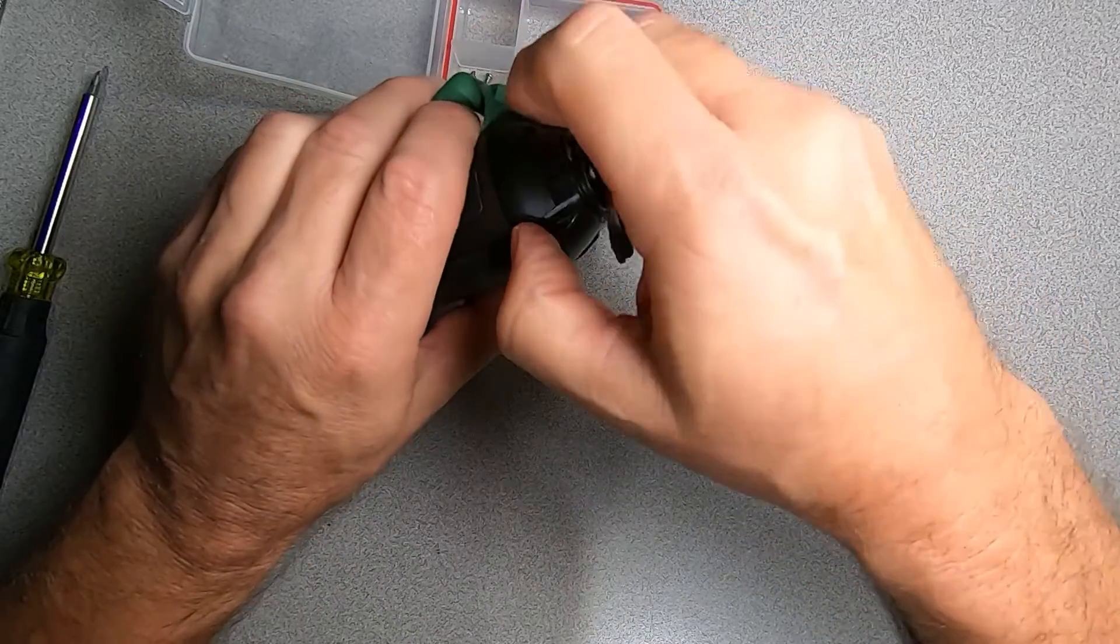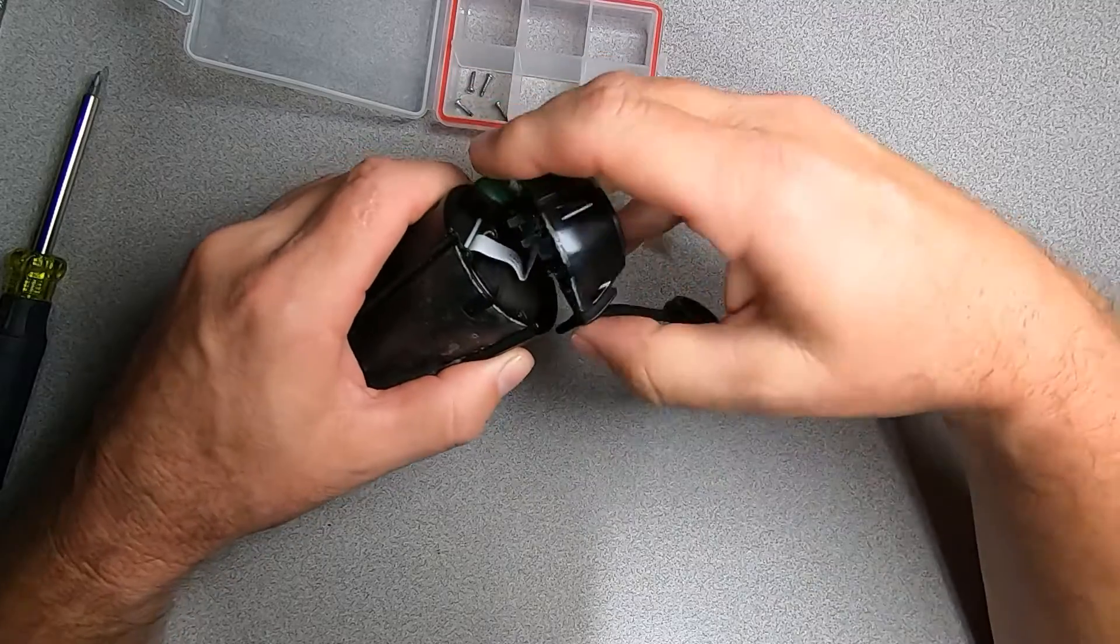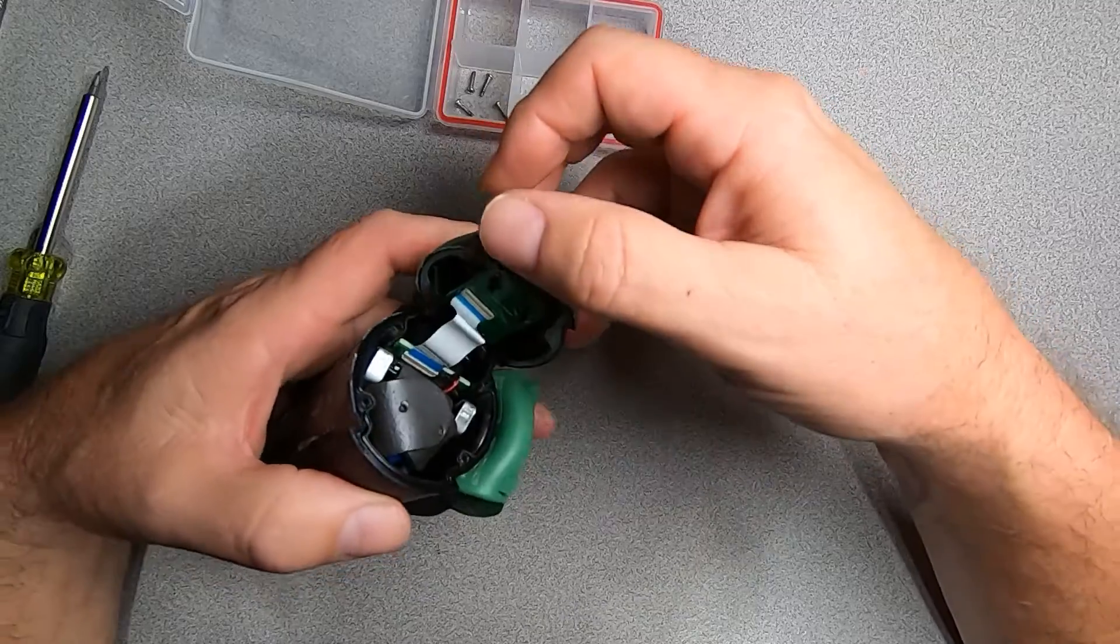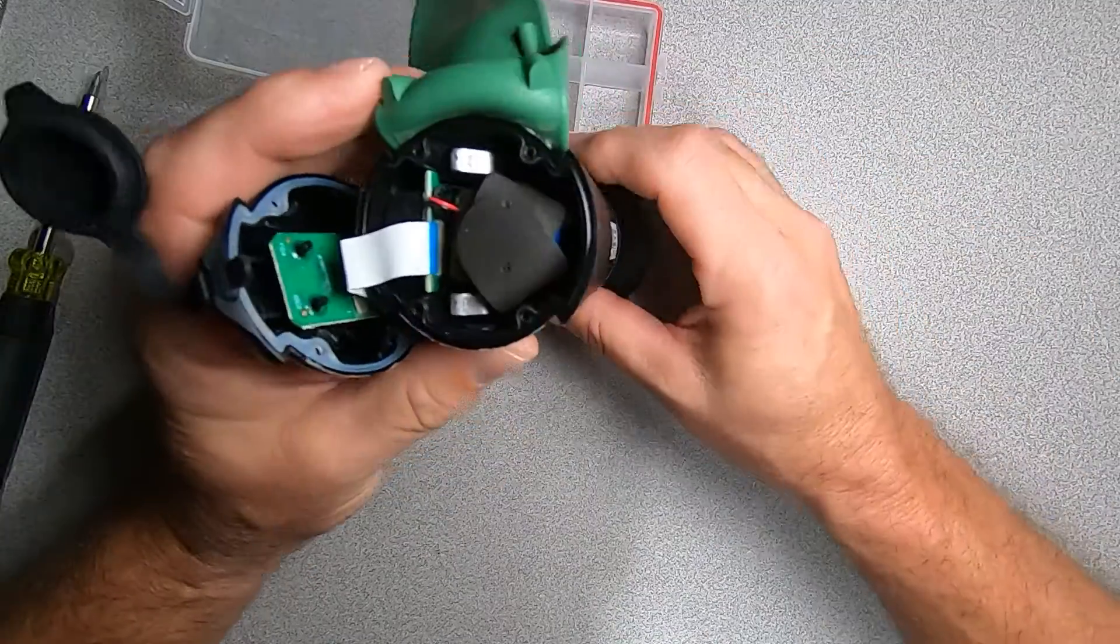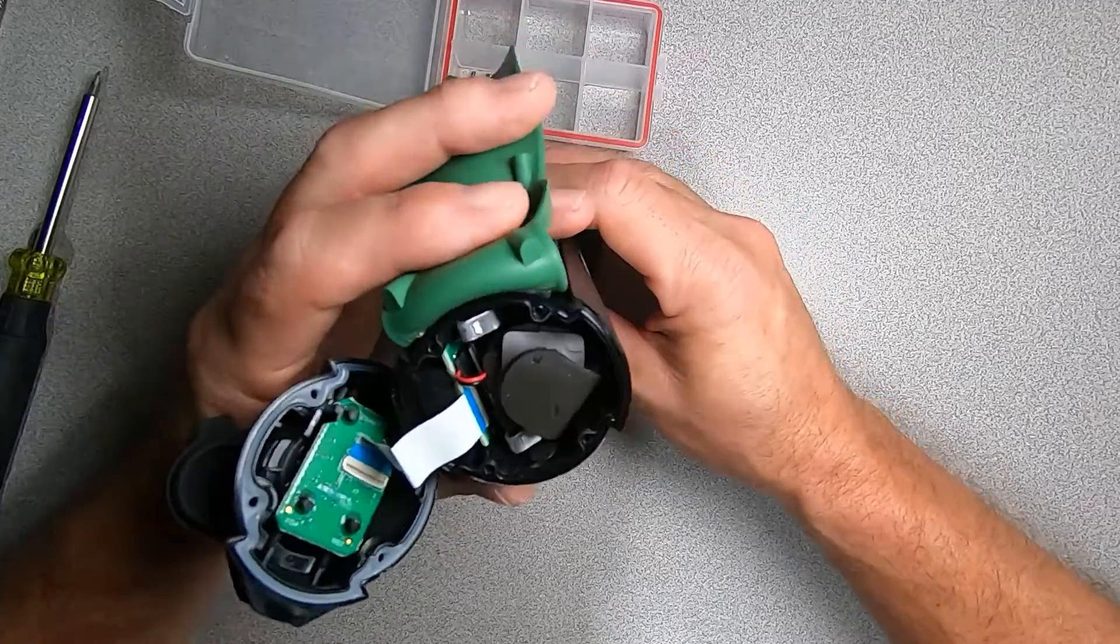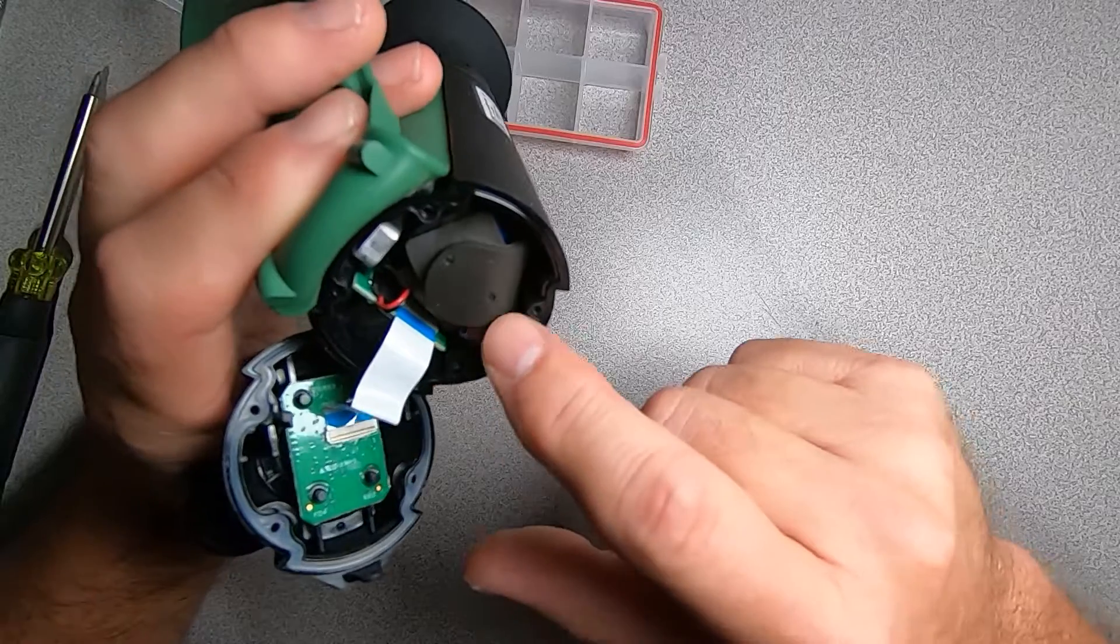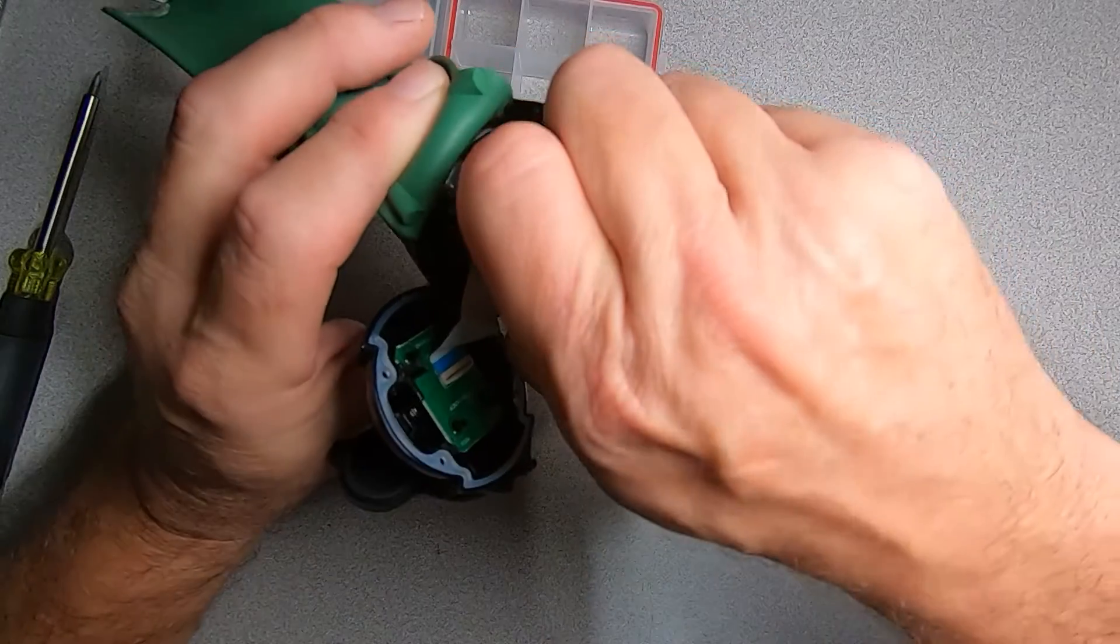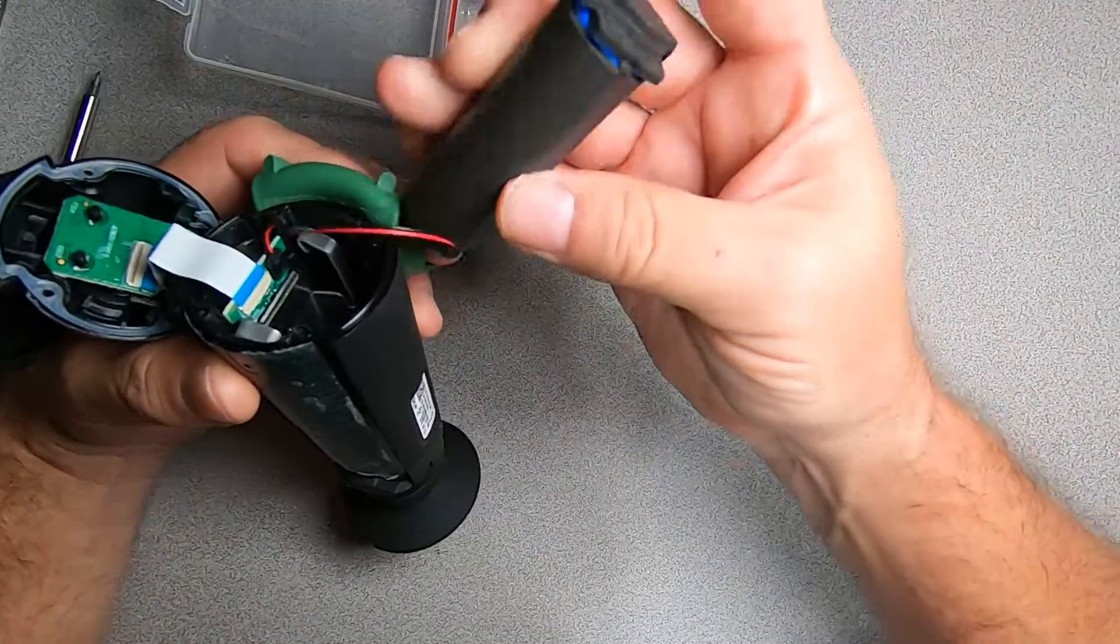Let's go ahead and pull these screws out and take our device apart. Now that we've got our screws out, we can go ahead and pop our sensor out here. You can see it's held in with a little ribbon cable that hooks to the main board.